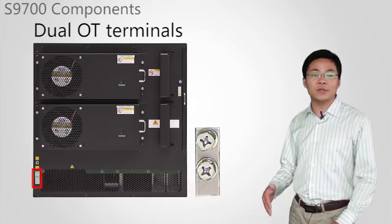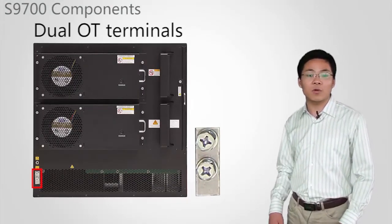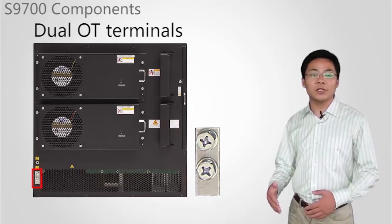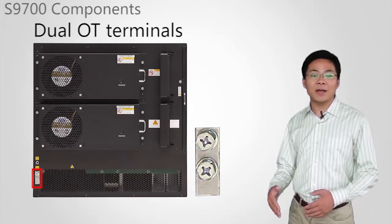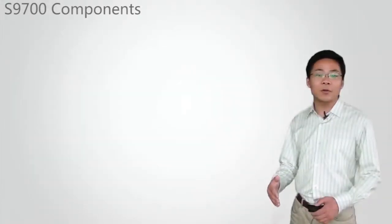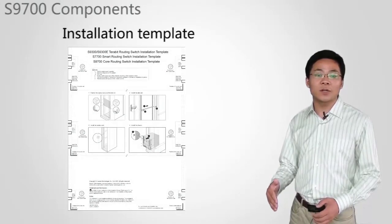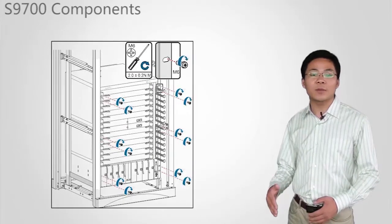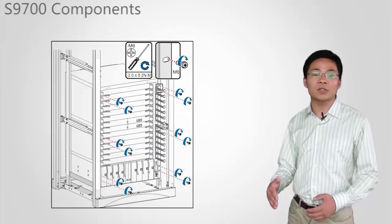S9700 series switches use dual OT terminals for ground cables. The ground point is at the bottom left on the back of the cabinet. Rack mounting ears are used to install the chassis in a cabinet. You can use the installation template to determine the position for installing rack mounting ears.